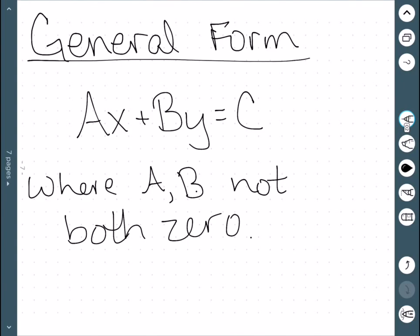The real advantage of the general form over the other two forms has to do with vertical lines. Both point-slope and slope-intercept use a slope. However, for a vertical line, the slope is undefined. But this general form will still allow us to represent a vertical line properly.